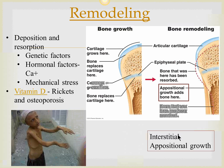The way to remember interstitial growth: 'inter' means in between, and the epiphyseal cartilage lies in between the epiphysis and the diaphysis, so it helps in interstitial growth. We also have bone deposition on the outside, which is known as appositional growth — this is how bones can grow in thickness.